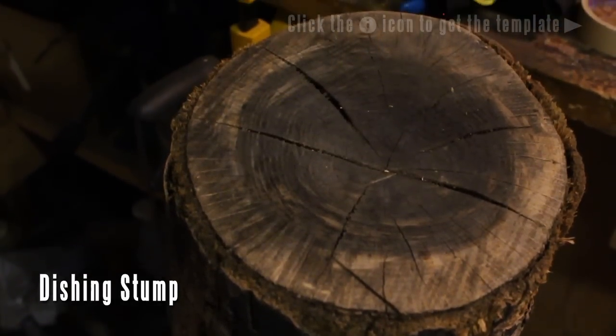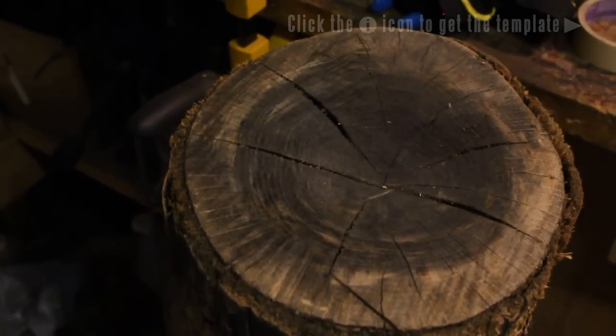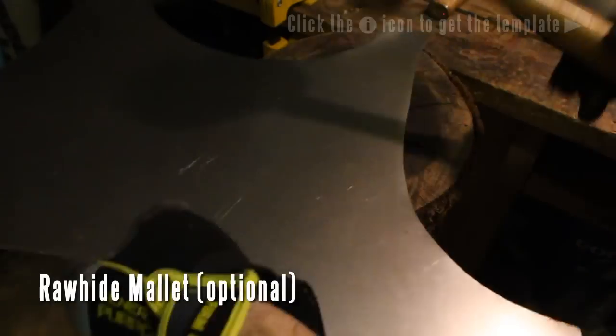This is a dishing stump. You're going to need this to round some of the parts. I also have a tutorial on how to make a dishing stump.